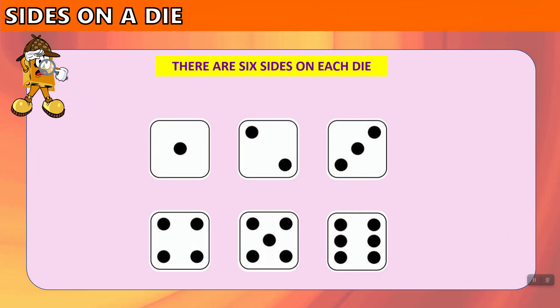There are six sides on each die. The numbers 1 to 6 appear once each — the numbers 1, 2, 3, 4, 5, and 6.